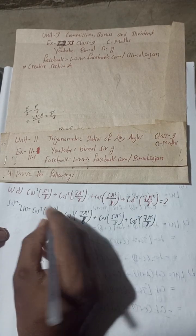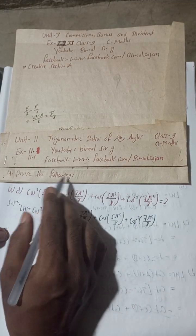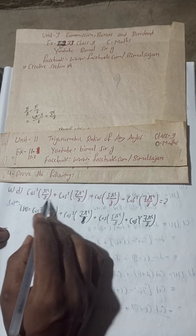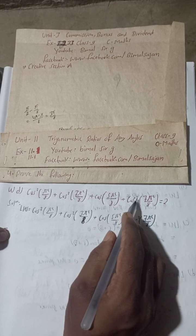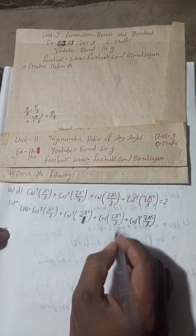We have to prove the following: cos²(π/8) + cos²(3π/8) + cos²(5π/8) + cos²(7π/8) equals 2.